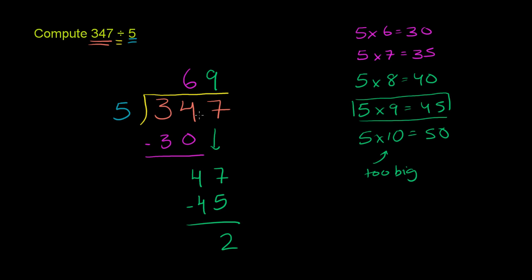So 347 divided by 5 is 69. It is equal to 69. But it doesn't go evenly into 347. There's something left over. There's a remainder.